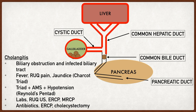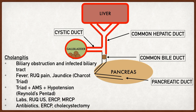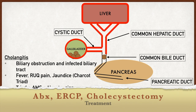Diagnosis of cholangitis is similar to choledocholithiasis — start with a right upper quadrant ultrasound, but you may need an ERCP or MRCP. CT abdomen and pelvis can also pick up any of these diagnoses, but right upper quadrant ultrasound remains the imaging of choice for hepatobiliary disease. Treatment involves antibiotics, ERCP to remove the obstructing stone, and cholecystectomy is also usually performed.